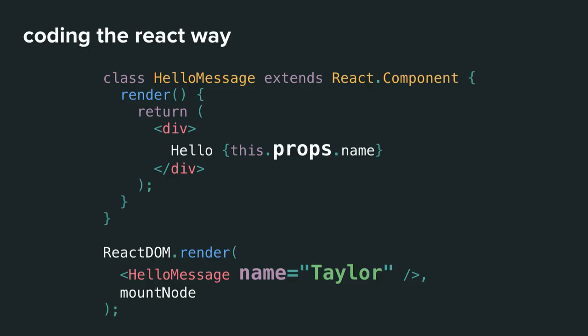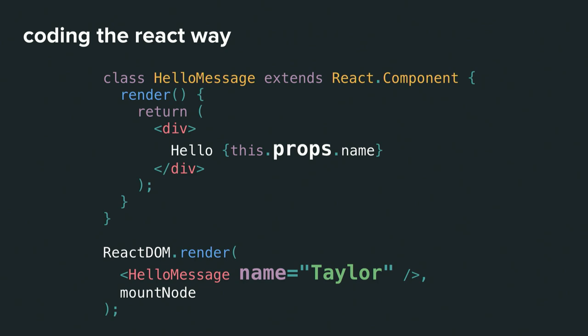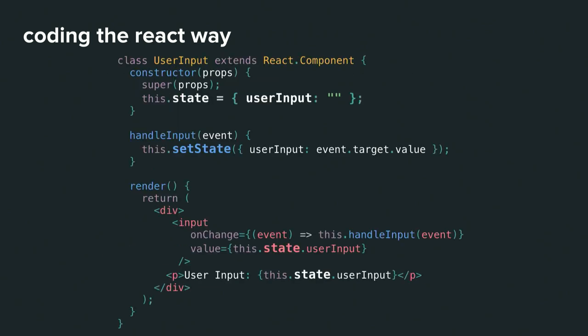To render a component, you render it to the DOM. You construct a HelloMessage component, pass in name as 'Taylor', and you'd see a div with 'Hello Taylor'. In more complex applications, the user puts in input and you update your view based on that, potentially sending data to the server.